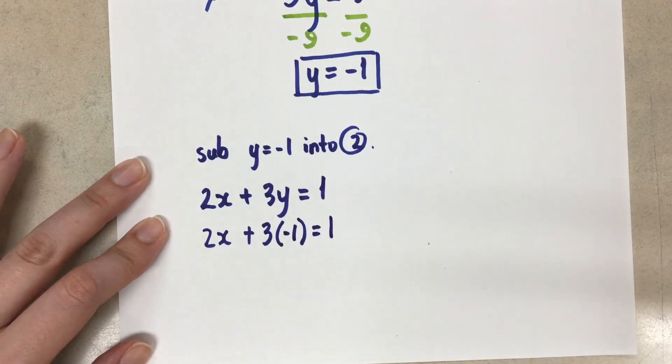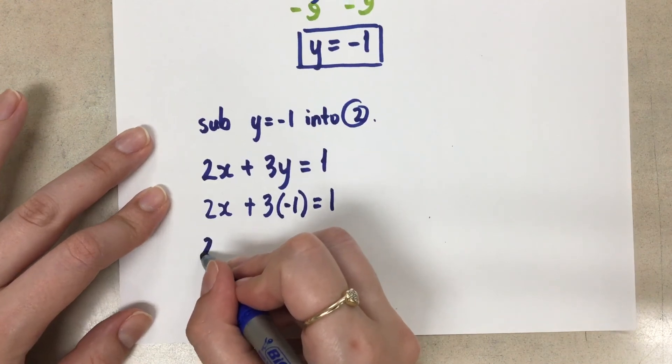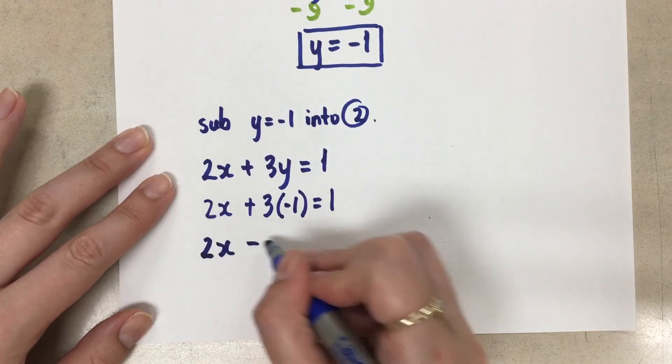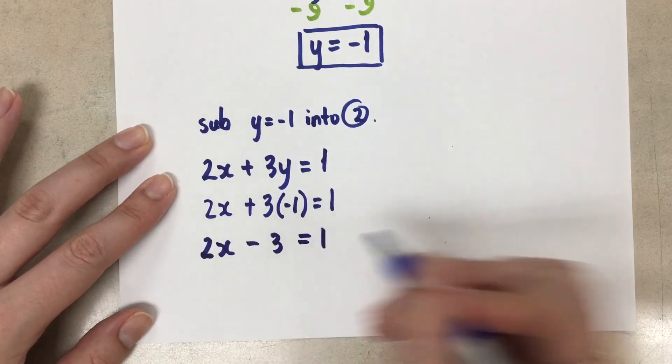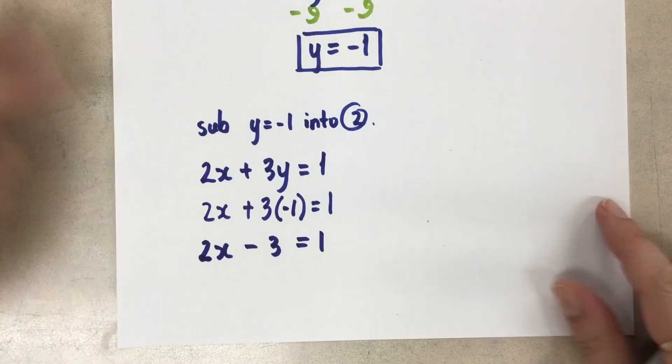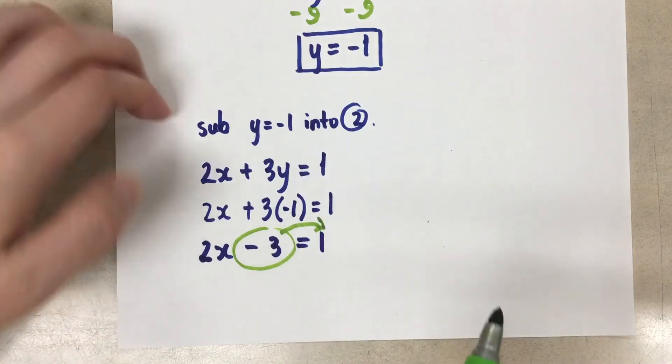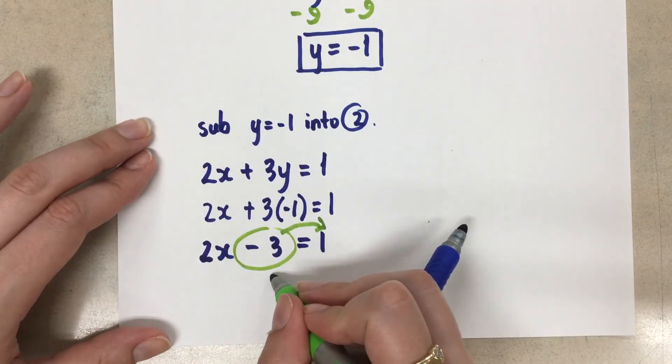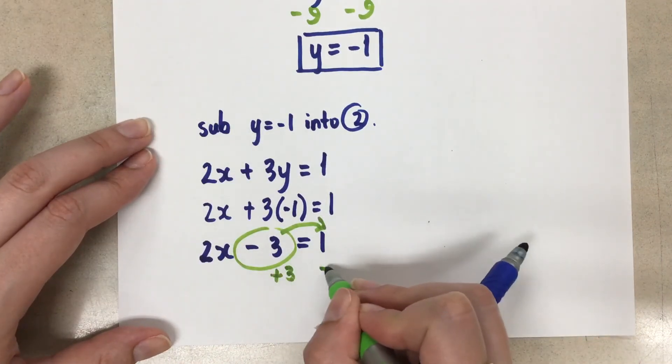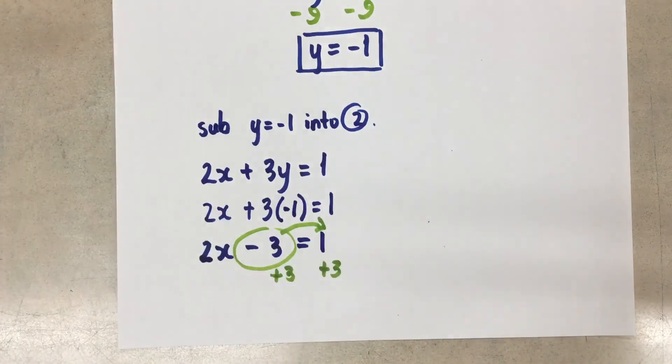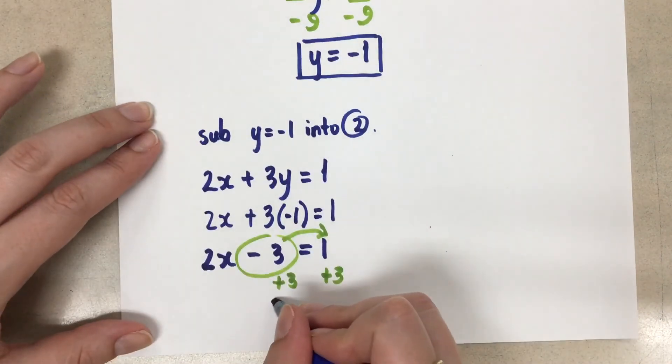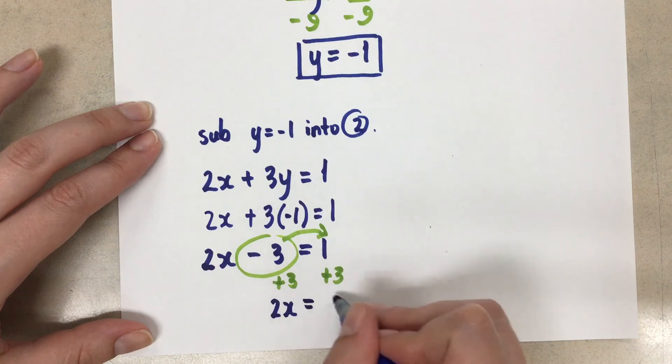Which gives us 2x minus 3 equals one. Now let's solve this equation for the x. So move this over to the other side. Since it's a minus three, we'll do a plus three to move it over. And that leaves us with 2x equals four.